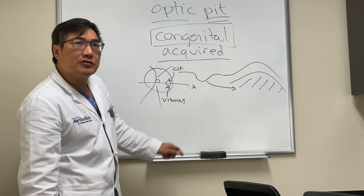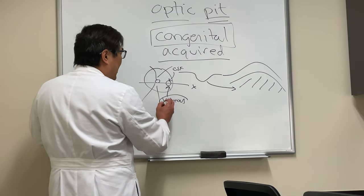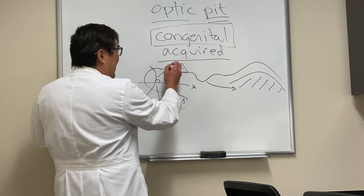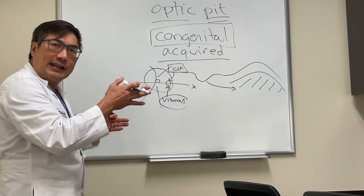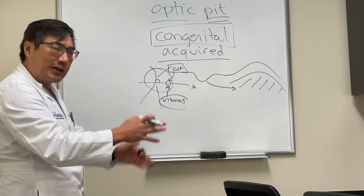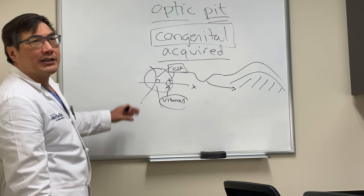Most people believe it's vitreous now. There have been studies to try and see if this is actually connected to the CSF in the sheath or not, but it's been a mixed bag.